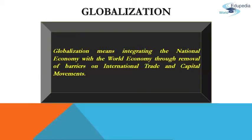Now, what are the changes made by globalization in the Indian economy? The new economic policy, i.e. NEP, prepared a specified list of high technology and high investment priority industries in which automatic permission will be available for foreign direct investment up to 51% of foreign equity. In respect of foreign technology agreements, automatic permission is provided in high priority industry up to a sum of Rupee 1 crore.